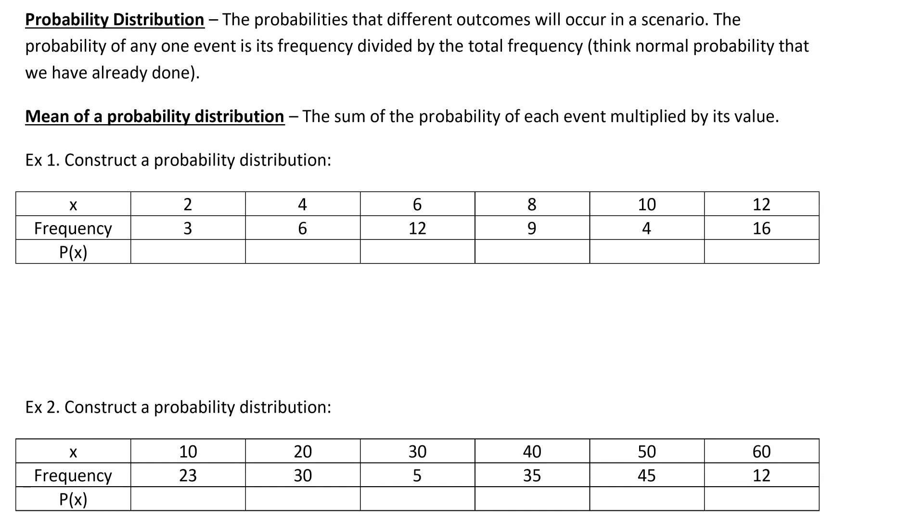Hey everybody, in this video we're going to be talking about probability distributions and expected value. Starting off, we're going to talk about probability distributions. A probability distribution is the probabilities that different outcomes will occur in a scenario. The probability of any one event is its frequency divided by the total frequency, so frequency just means how often does that possibility come up.